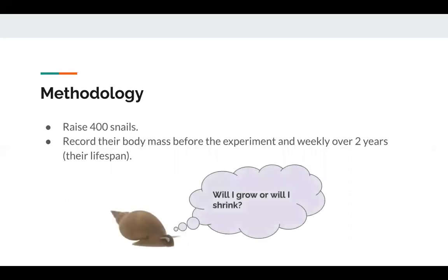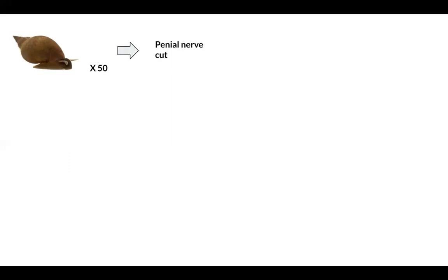To test my prediction, I will raise 400 snails from egg masses in perforated jars containing water. When the snails hatch, body mass will be recorded using an analytical balance before the experiment begins and weekly over their lifespan. In treatment one, 50 snails will have their pineal nerve cut. Cutting this nerve prevents sperm production, so these snails mate as females.